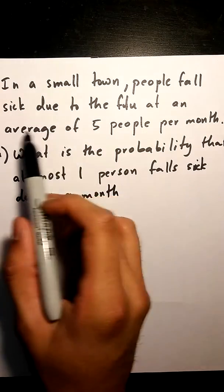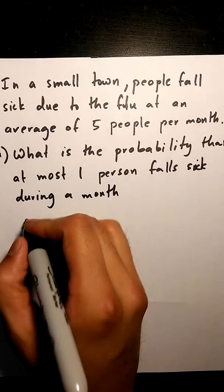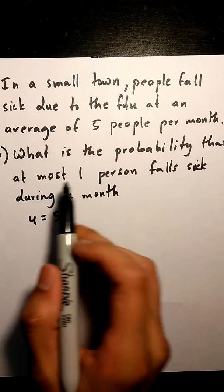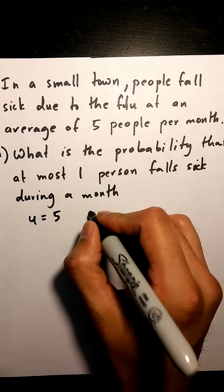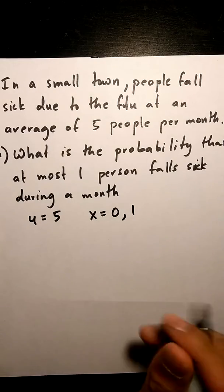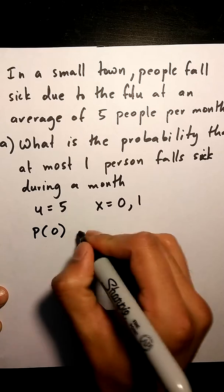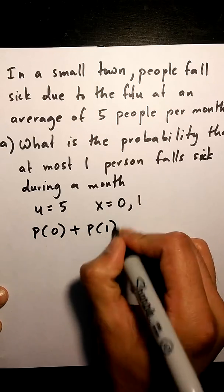We know that the average or the mean is basically five, and then at most one means that x can either be zero or one. I'm going to sub these into my Poisson equations, so it's going to be P of zero plus P of one.